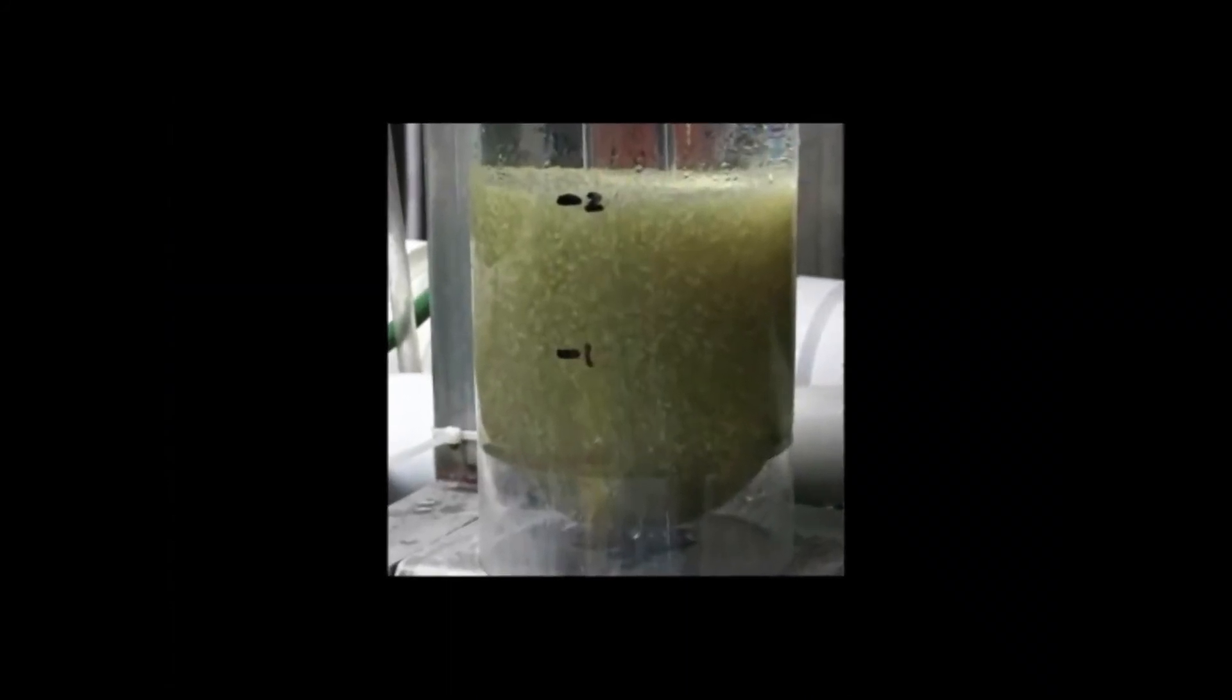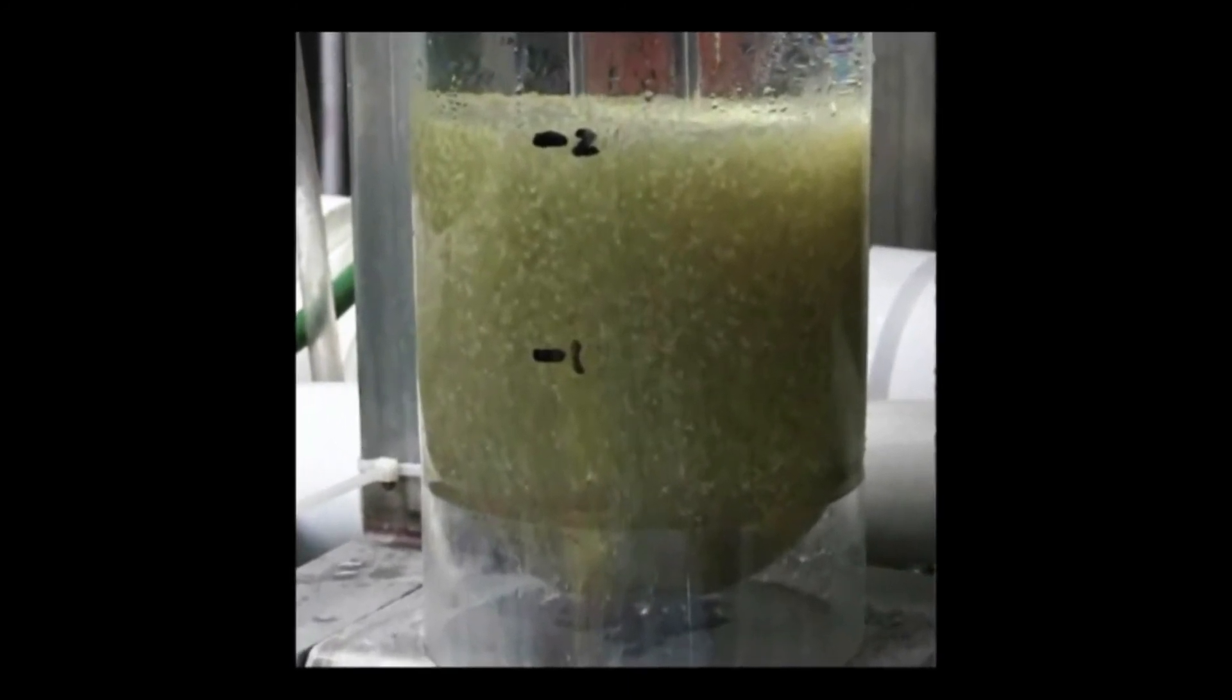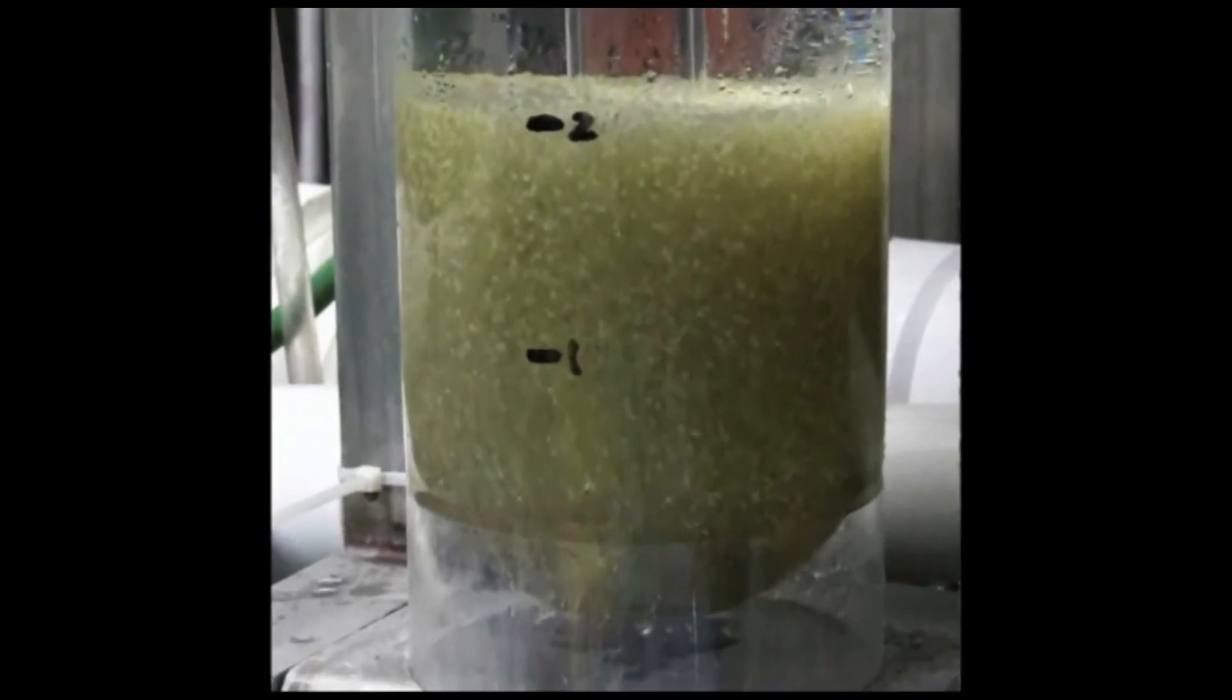To determine an approximate hatching success, total volume of eyed eggs can now be extrapolated from the bell jar markings. To do this, the inflow of water can be turned off for several minutes to let the eggs settle. Total egg volume can be extrapolated from the markings. It is recommended to recalculate number of eggs per milliliter, as discussed earlier, to determine total egg numbers at this stage.